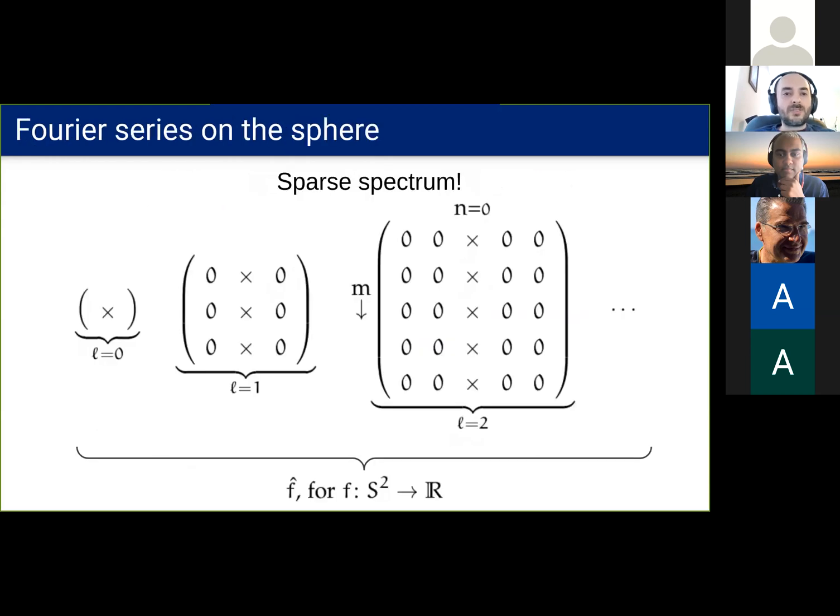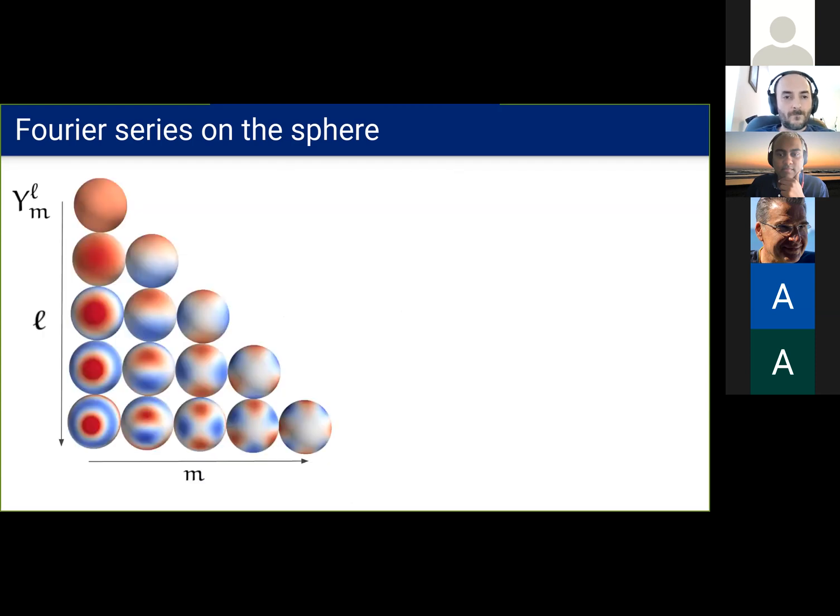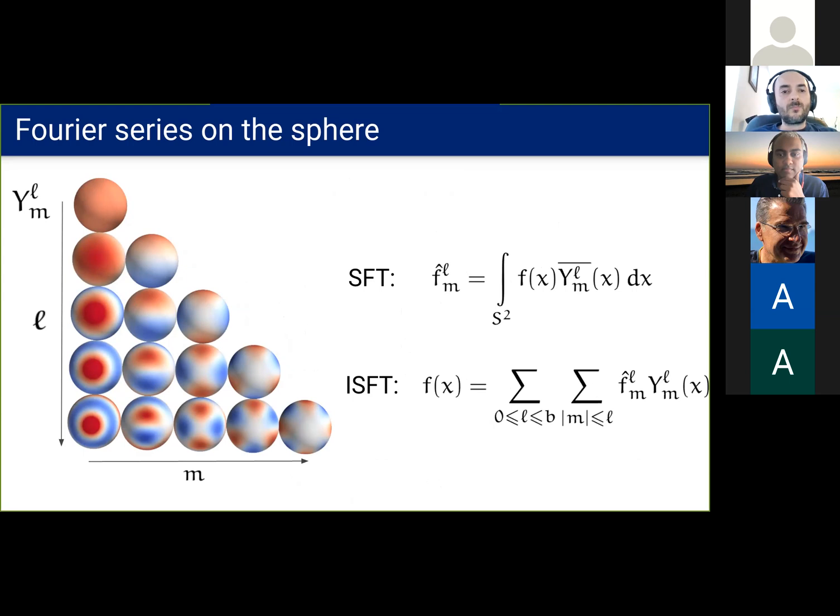As we have seen, the Fourier analysis of compact groups extends to its homogeneous spaces by considering a sparse spectrum. So the sphere is a homogeneous space of SO(3). And in this case, the sparsity manifests with a single non-zero column per degree. The restriction of the SO(3) matrix elements to the sparsity pattern results in the spherical harmonic spaces. And functions on the sphere can be expanded in this basis with a spherical Fourier transform.